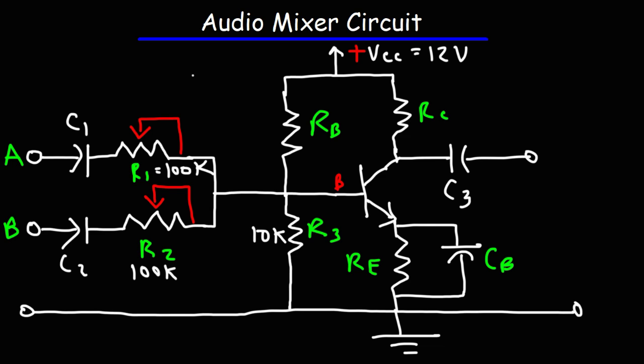Another way in which you could increase the voltage gain is by increasing RC. So keep in mind, for this particular circuit with the bypass capacitor, the voltage gain is RC over RE.